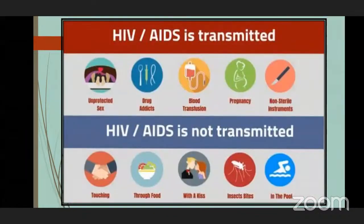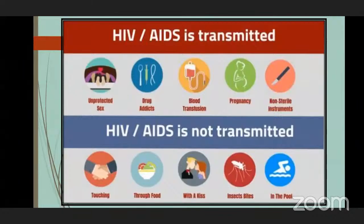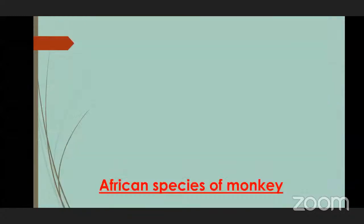HIV is transmitted via unprotected sex, use of drugs, blood transfusion from infected blood, pregnancy — from a pregnant mother to a child — and using non-sterile instruments. Students should always remember that AIDS does not occur by touching hands, sharing food, or shaking hands with an infected person. Our behavior with an HIV-infected person must be normal. HIV was first reported in an African species of monkeys.